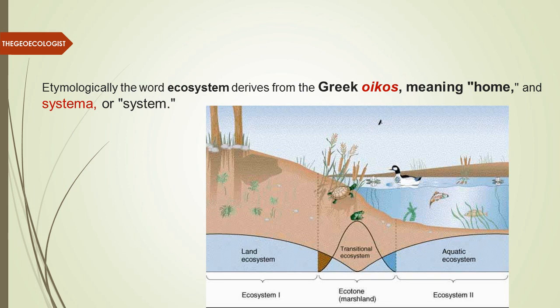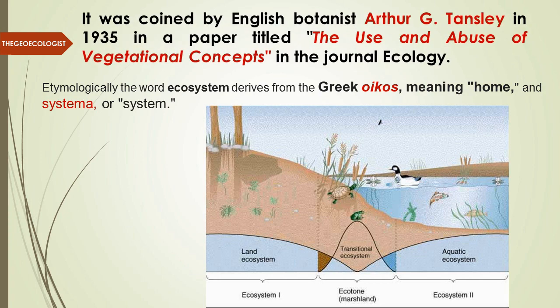First of all, let's look at the etymology. The word ecosystem derives from the Greek word oikos which means home, and systema means system. This was coined by English botanist Arthur G. Tansley in 1935 in a paper titled 'The Use and Abuse of Vegetational Concepts,' published in the journal Ecology. Remember: Arthur G. Tansley, 1935, 'The Use and Abuse of Vegetational Concept.'